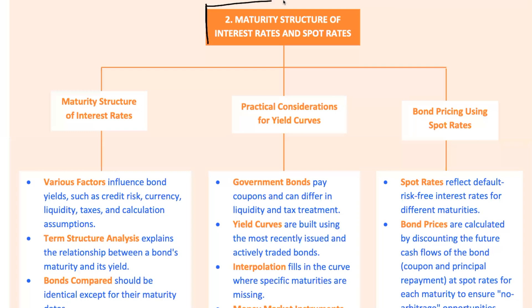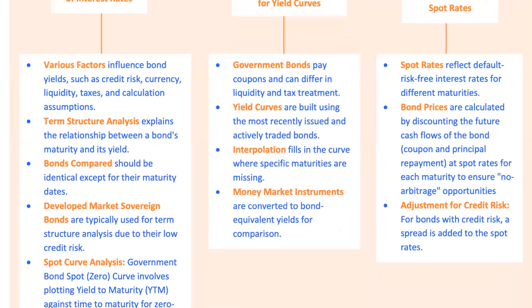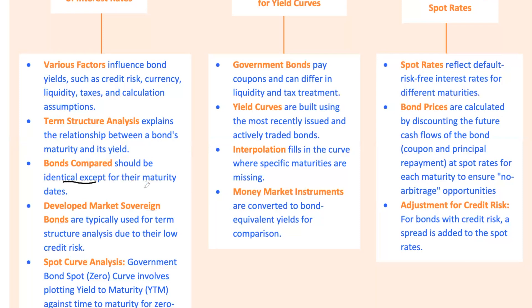Let's tackle the concept of the maturity structure of interest rates and how spot rates play into this. When talking about bond yields, numerous factors come into play: credit risk, currency impact, liquidity, and even taxes. These elements can cause significant variations in bond yields. For instance, a bond from Romania offering a higher yield compared to a German bond — this difference is often due to heightened credit risk and currency stability concerns. The term structure of interest rates gives us a roadmap explaining how yields vary with the maturity of bonds. Ideally, you'd use zero-coupon bonds that are default risk-free, like those from developed market sovereign bonds, across various maturities, because these bonds exclude factors like periodic coupon payments, focusing purely on maturity effects.